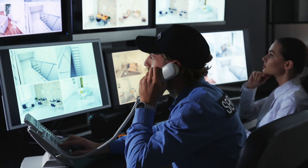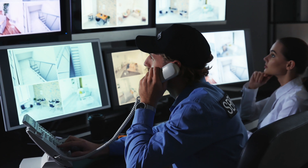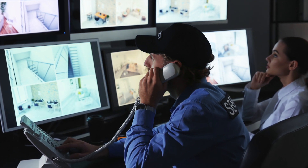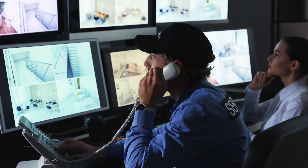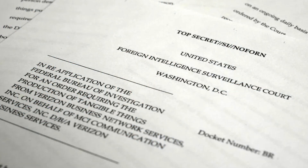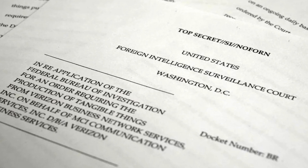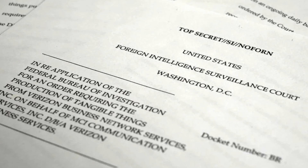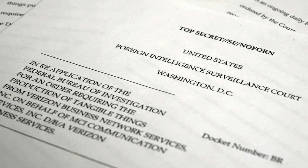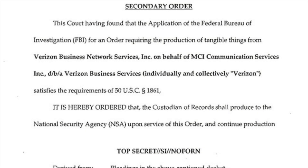The report was released on The Guardian, written by Glenn Greenwald. According to the document, telephony metadata includes comprehensive communications routing information, including but not limited to session identifying information — for example, originating and terminating telephone number, international mobile subscriber identity number, international mobile station equipment identity number, and time and duration of call. It noted that the telephony metadata does not include the substantive content of any communication, or the name, address, or financial information of a subscriber or customer.